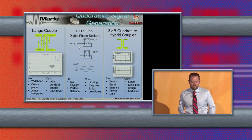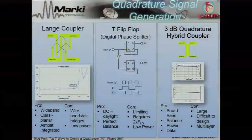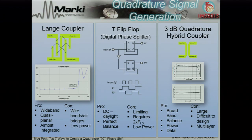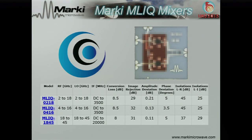The 3 dB quadrature hybrid coupler is what we make and what we like. It can handle lots of power, has very good balance, is useful for data, doesn't limit, and is passive — it's kind of the gold standard for mixers. The microlithic technology platform we've developed and patented at Marki allows us to make multilayer structures necessary to create broadband quad hybrids in a small form factor, which is the key to our most recent line of mixers that can achieve 10 to 1 kind of bandwidths in a small package.